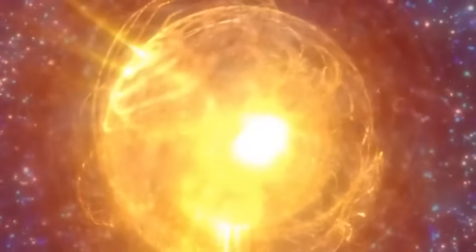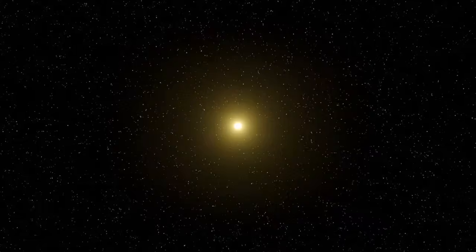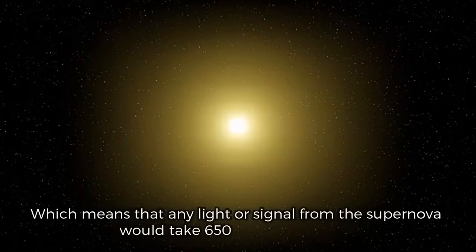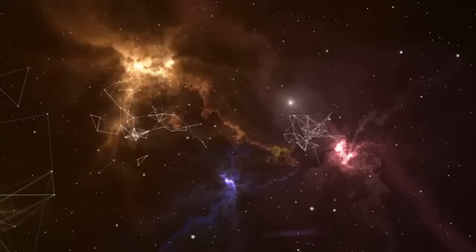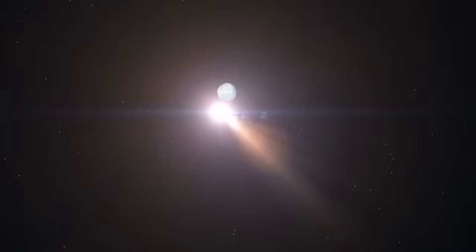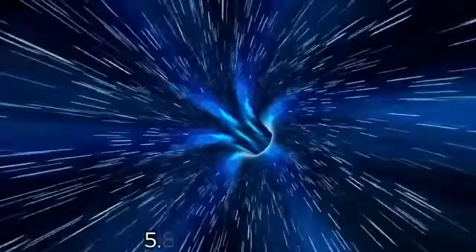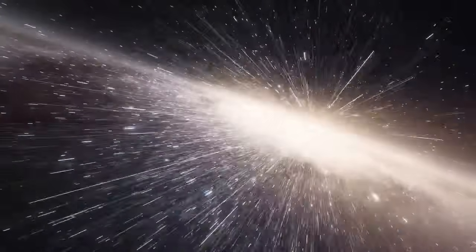But even if Betelgeuse were to go supernova today, we wouldn't know about it right away. The star is located approximately 650 light-years from Earth, which means that any light or signal from the supernova would take 650 years to reach us. In essence, when we observe Betelgeuse, we see it as it appeared 650 years ago, not as it is at this very moment. This concept of light-years is crucial to understanding the vast distances involved in astronomical observations. A light-year is the distance light travels in a single Earth-year, roughly 9.46 trillion kilometers or 5.88 trillion miles. To put that into perspective, if you could travel at the speed of light, it would still take you 650 years to reach Betelgeuse.